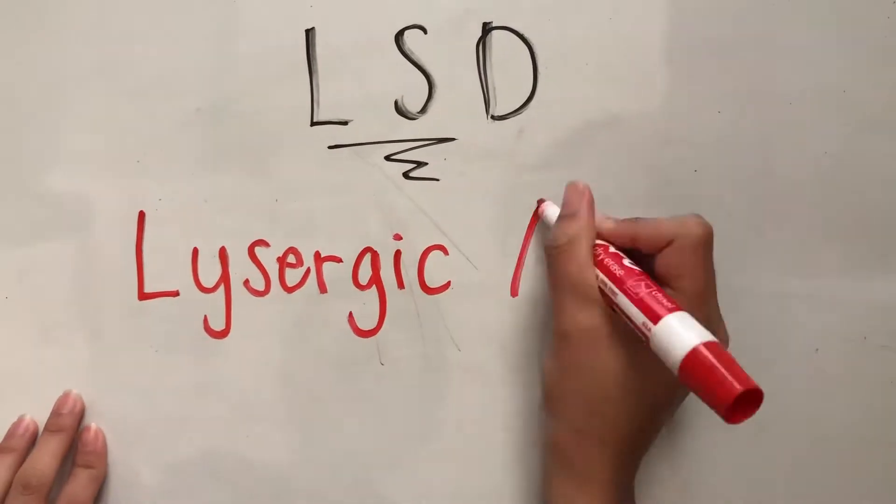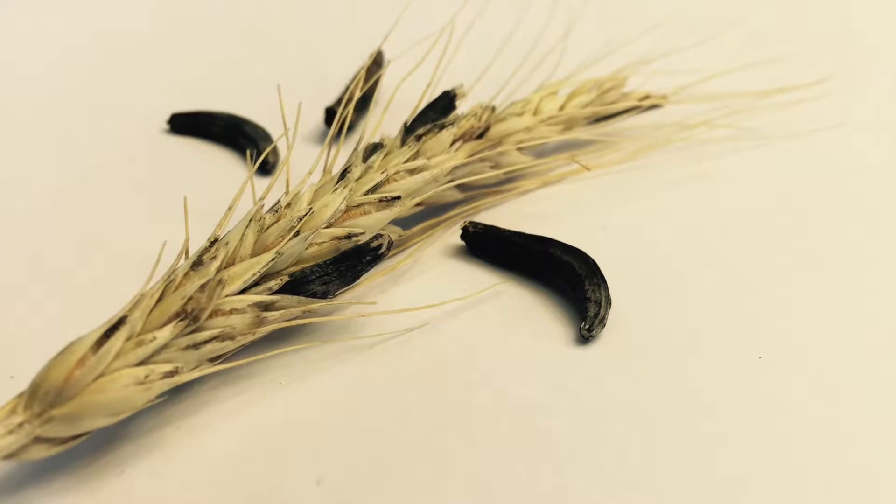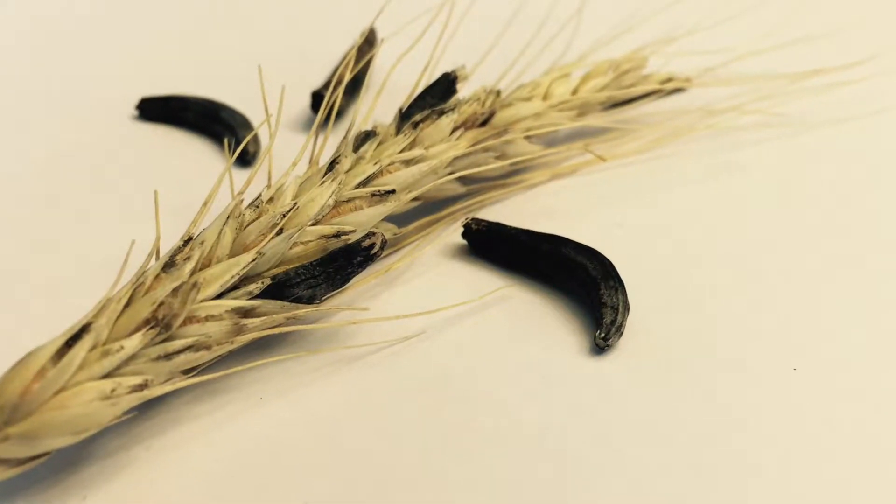LSD, lysergic acid diethylamide, commonly known as acid, is a psychedelic drug derived from ergot fungus that grows on rye or other grains.